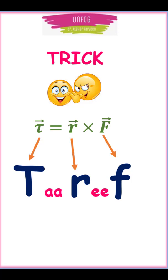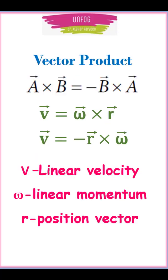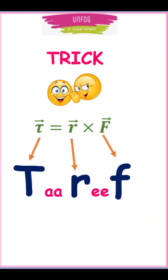Now you know that torque is equal to R cross F and linear velocity is the other way round, that is, omega cross R. So just remember that torque is Tarif ke lahir.